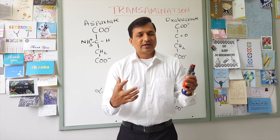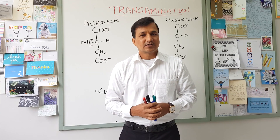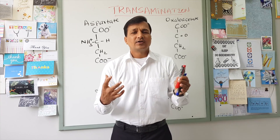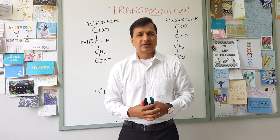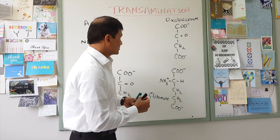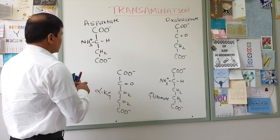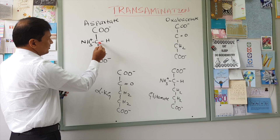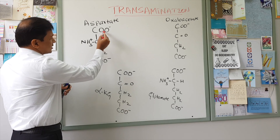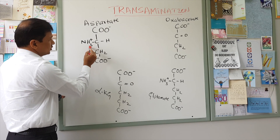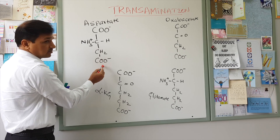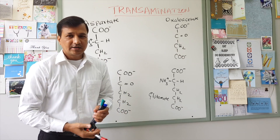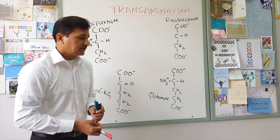Let me explain how exactly this transamination reaction goes on. I have taken aspartate as an example. This is the structure of aspartate — it has an alpha carbon in the center, then a carboxyl group, amino group, and the side chain of aspartate which is CH2 and COO minus. Aspartate is a negatively charged amino acid.